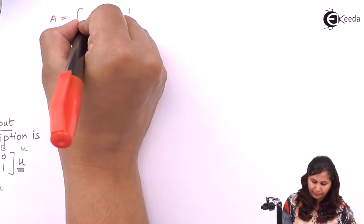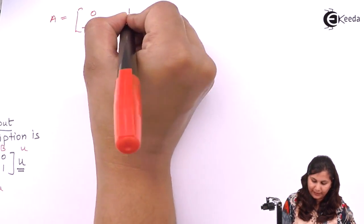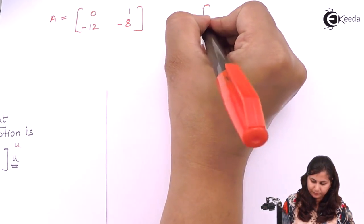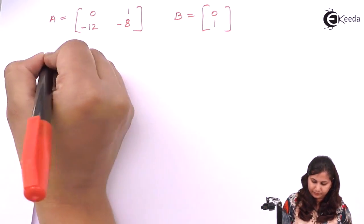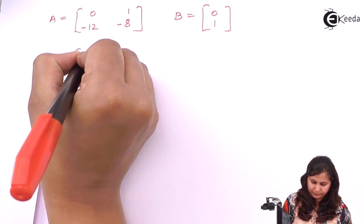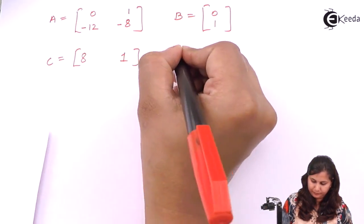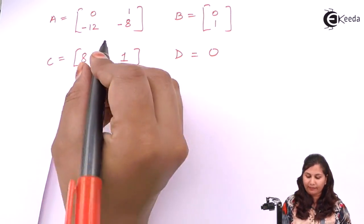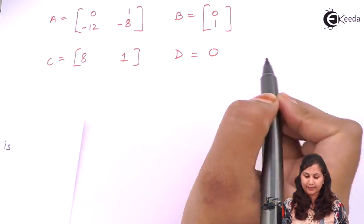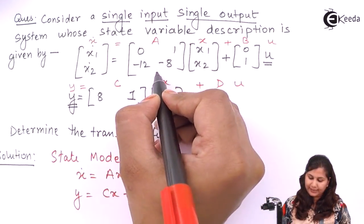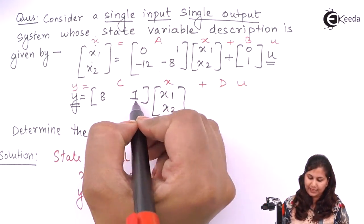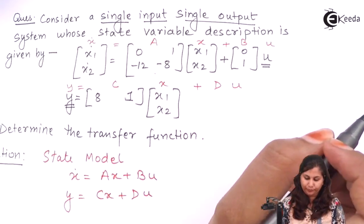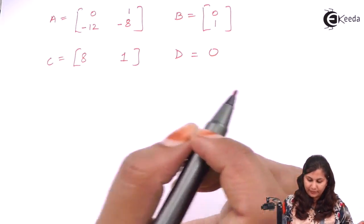So A will be the matrix [0, 1; -12, -8]. These are the values of the A, B, C, D matrices. We have A as this matrix, B as this, C as this matrix, and since D is not present, it is 0.